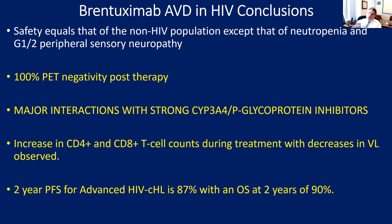The conclusions of the study: outcomes were as good or better than in the non-HIV population in terms of disease-free survival. Neutropenia and sensory neuropathy were worse, so we need to be sensitive to these during treatment. Every single person who made it through treatment had a negative PET scan at the end of therapy. Progression-free survival and overall survival were spectacularly good.